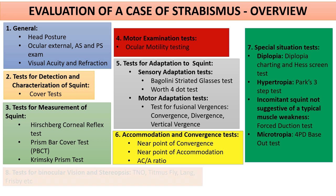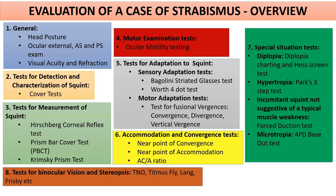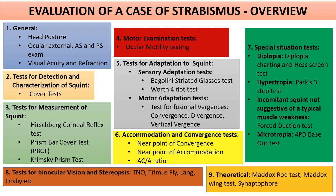Next comes the test for binocular vision and stereopsis, including the TNO, Titmus, Fly, Lang, and Frisbee tests, whichever is available — the most common being the Titmus Fly test. Last are the theoretical tests — the Maddox rod test, Maddox wing test, and synaptophore — which are not commonly done practically and I will not be discussing. The binocular vision and stereopsis tests can be found in any textbook. I will be discussing tests 2, 3, 5, and 6 in this video and tests 4 and 7 in part 3.